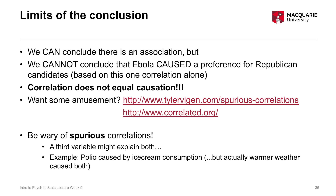Spurious correlations are like a faulty correlation where it's actually something else causing both of these things, making it seem like they are inherently related or intertwined, when actually it's something else entirely that's causing both of these things to occur.